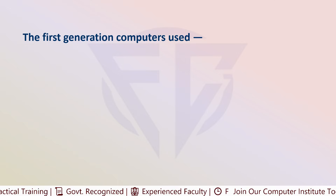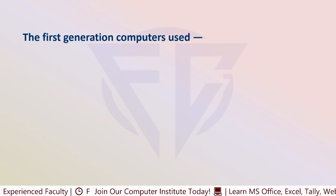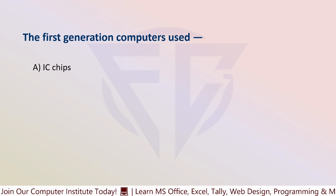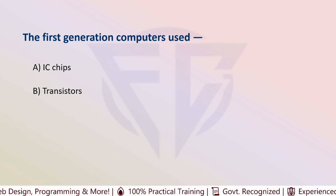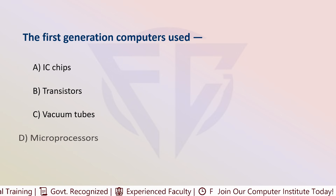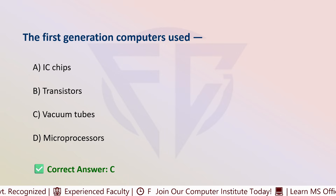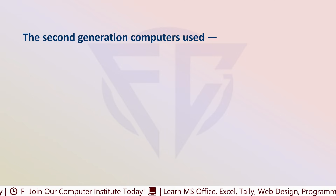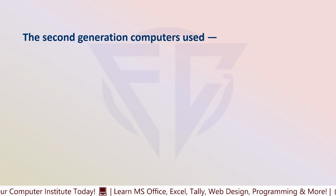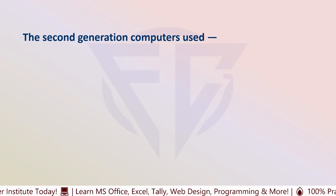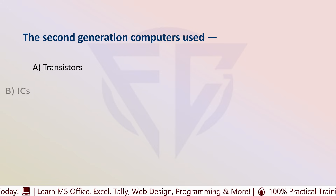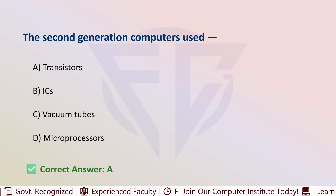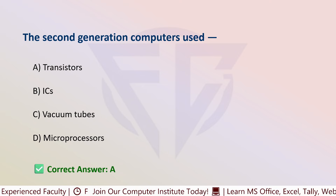The next question is: the first generation computers used — options are: A) IC chips, B) Transistor, C) Vacuum tube, and D) Microprocessor. The correct answer is C, that is vacuum tube. The next question: the second generation computers used — options are: A) Transistors, B) IC, C) Vacuum tube, and D) Microprocessor. The correct answer is A, that is transistor.